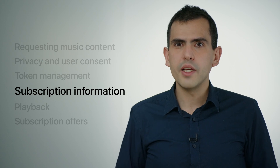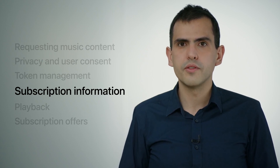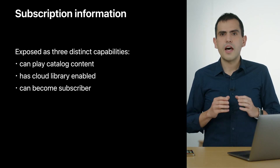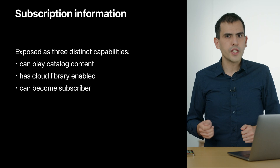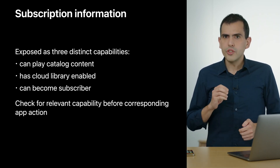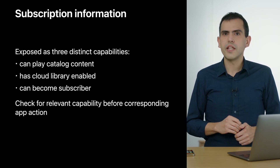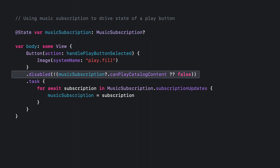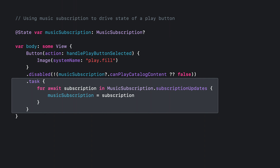One more thing you may need is a way to figure out if your user has an active Apple Music subscription. Subscription information in MusicKit is exposed as three distinct capabilities, which tell you if the user can play content from the Apple Music catalog, if they have iCloud Music Library enabled, or if they can become subscribers. For example, if you have a play button hooked up to play some music, you may want to keep it disabled if your user cannot play catalog content. You can define a state variable in your view to track the music subscription, apply the disabled modifier to your button if canPlayCatalogContent is false, and use the new subscription update stream inside an asynchronous task modifier to be notified of changes.